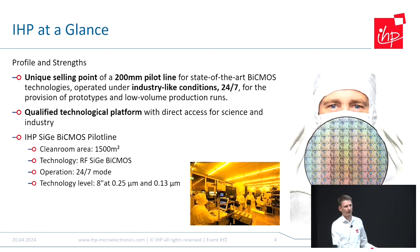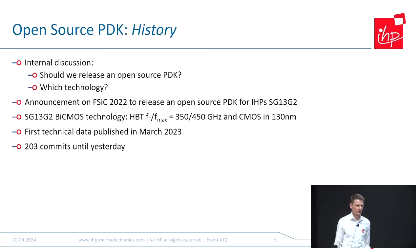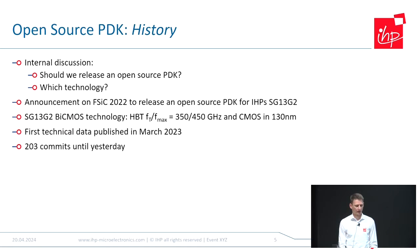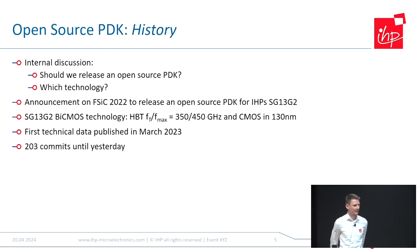And that's even the reason why we made this open source PDK — we are able to do this, so we did it. After an internal discussion about whether to release an open source PDK, we decided yes, and then we had to decide which technology to use. Finally, we chose our SG13G2 BiCMOS technology. The frequency is quite high — for the HPTs, FT and Fmax are 350 and 450 gigahertz. So if you like to design RF designs, like a wireless LAN receiver or transceiver, you can do this using the HPTs instead of CMOS technology.